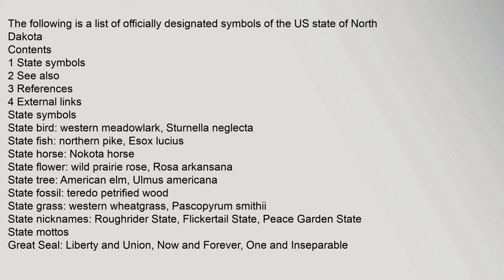Roughrider State, Flickertail State, Peace Garden State. State mottoes — Great Seal: Liberty and Union, now and forever, one and inseparable.